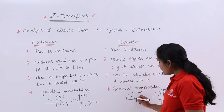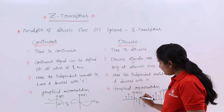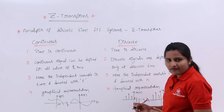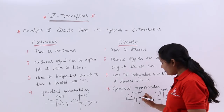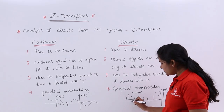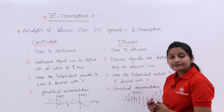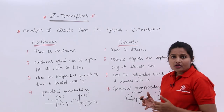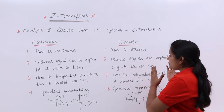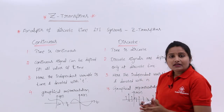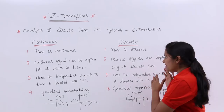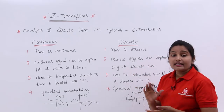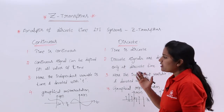For discrete signals, they provide samples or signal values only at discrete intervals of time — 1, 2, 3 or minus 1, minus 2, like this. So discrete signals are defined only at discrete intervals of time.